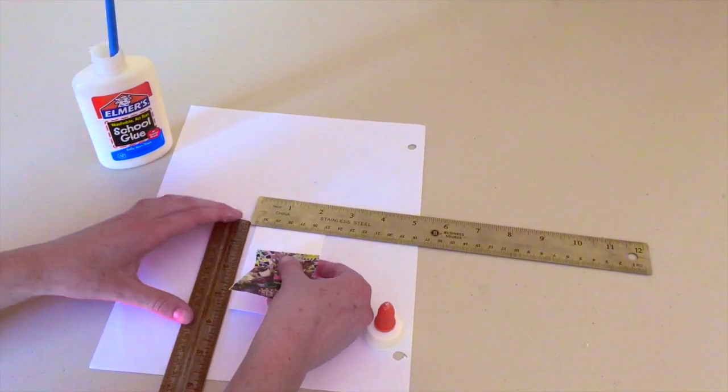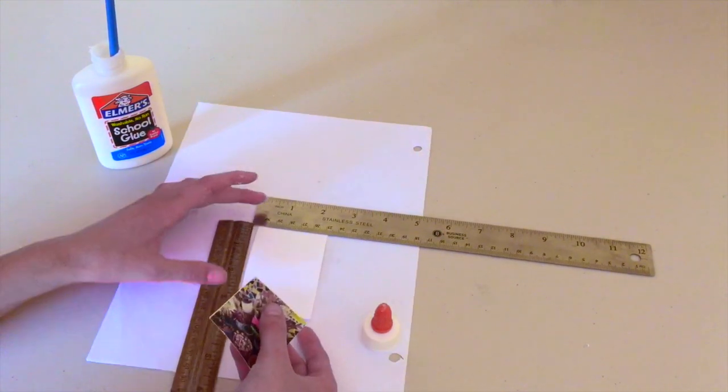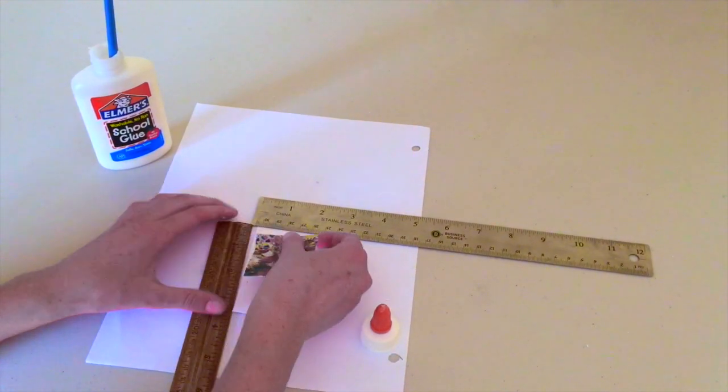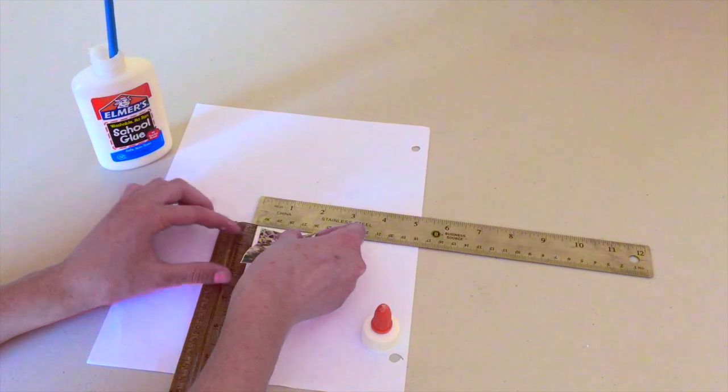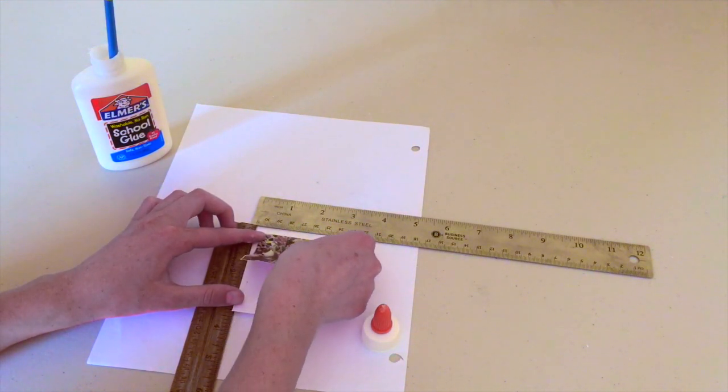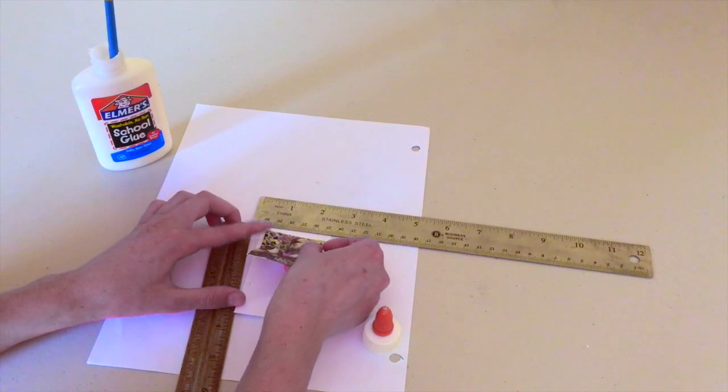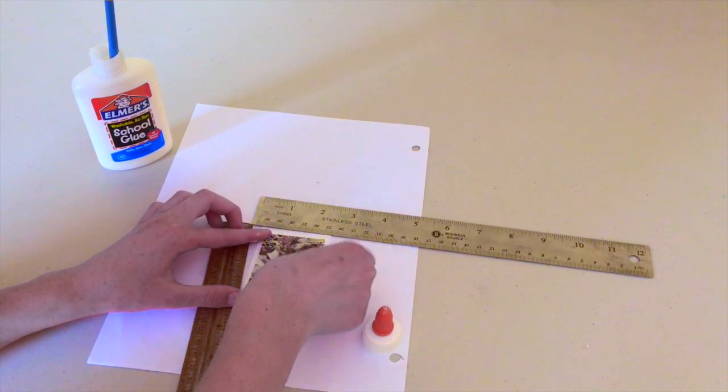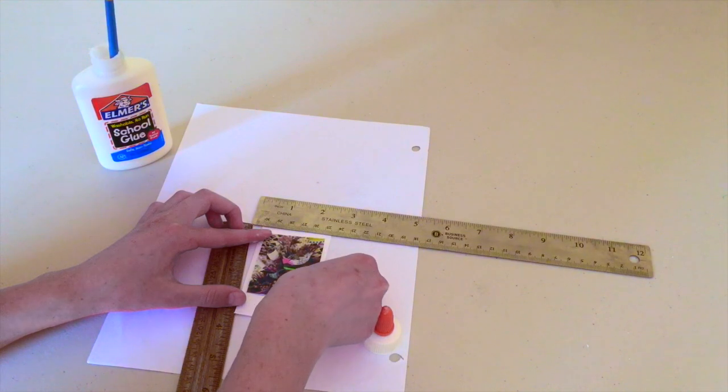And then what you want to do is take your picture and put about a quarter of an inch at the top. You don't have to measure it out like I did on this one. Most of them I just eyeballed it and they turned out just fine. And then just make sure there is about an even space on both sides.